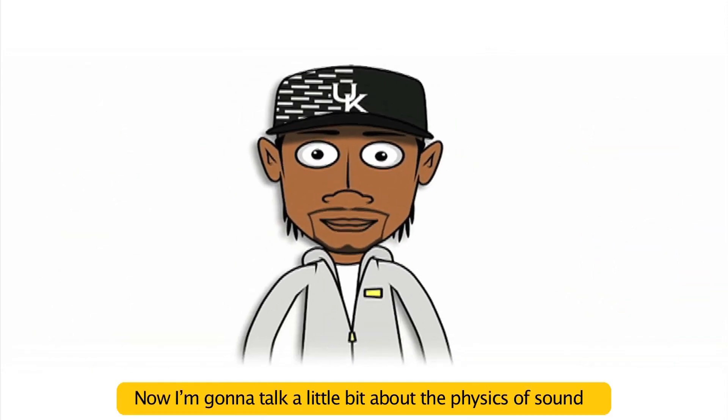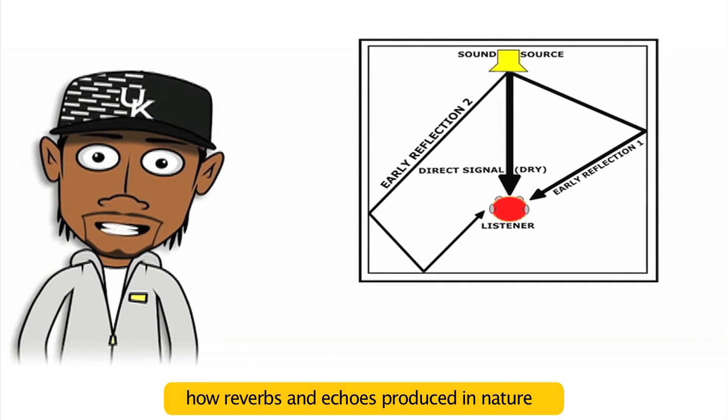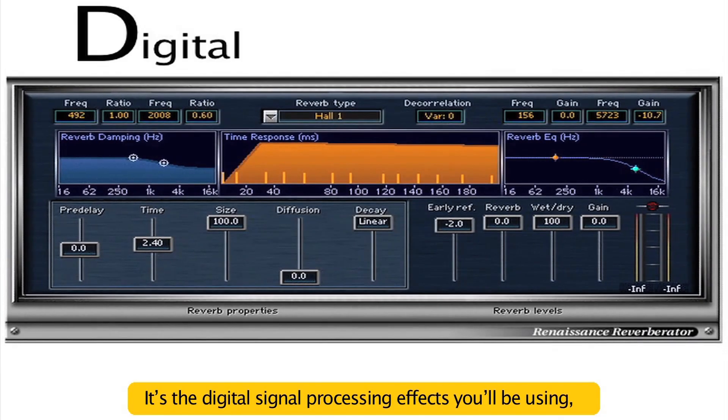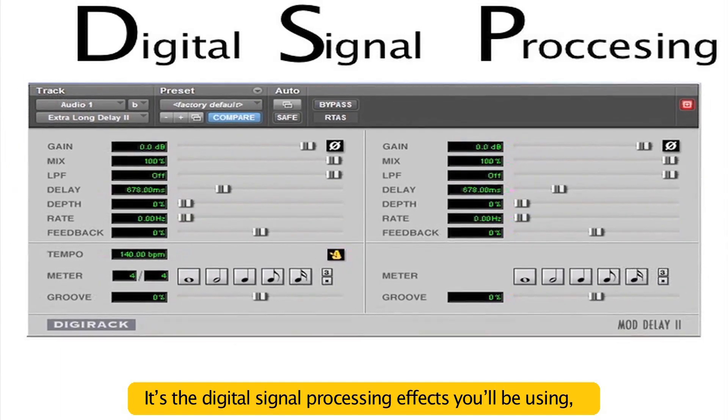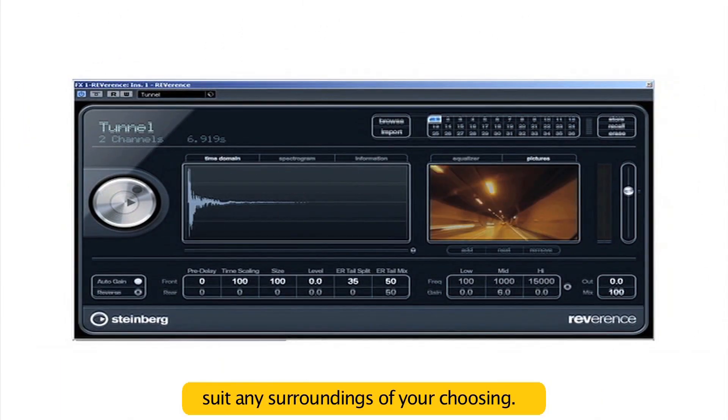Now I'm gonna talk a little bit about the physics of sound that surrounds natural acoustics—how reverbs and echoes produced in nature get reproduced in music. It's the digital signal processing effects you'll be using to make unrealistic or real-life acoustics suit any surroundings of your choosing.